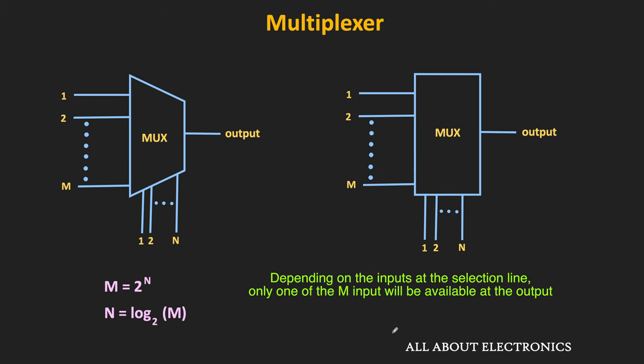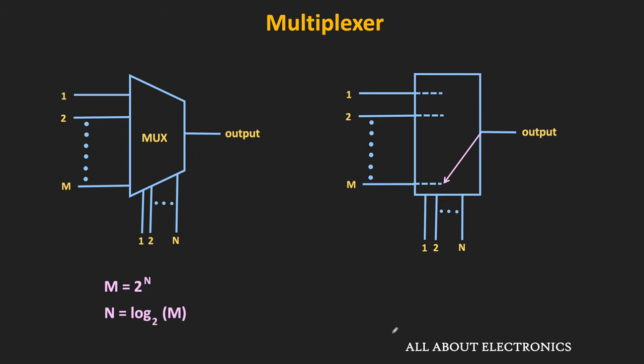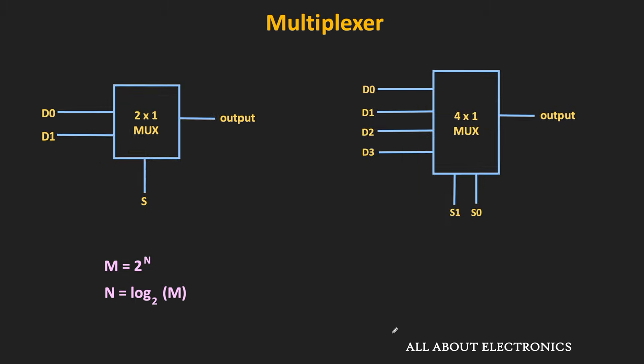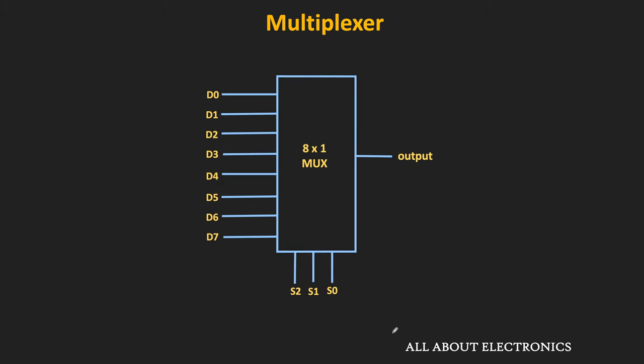Depending on the input combinations at the selection line, only one of the N inputs is available at the output. That means the inputs at the selection line decide which input will be available at the output. Depending on the number of inputs and selection lines, we have different types of multiplexers — like the 2-line to 1-line multiplexer and the 4-line to 1-line multiplexer. In the 2-to-1 MUX, we have 2 inputs, 1 output, and 1 selection line. In the 4-to-1 MUX, we have 4 inputs, 1 output, and 2 selection lines. We can also have 8-to-1 or 16-to-1 multiplexers.